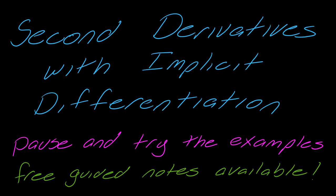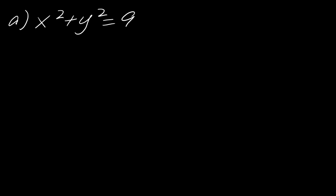I'm going to show you how to take second derivatives with implicit differentiation in this video. It's a little different because of just the nature of how the problems are set up. So let's start with this problem, x squared plus y squared equals 9.